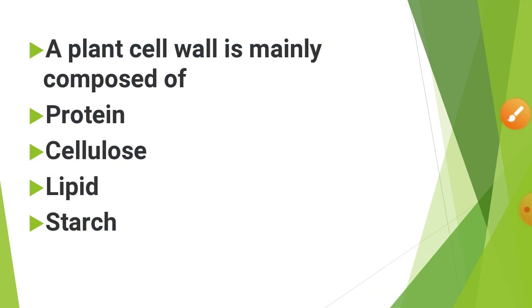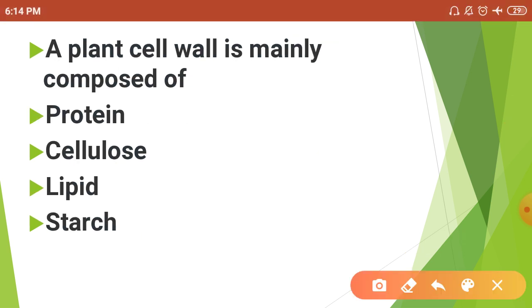The plant cell wall is mainly composed of protein, cellulose, lipid, or starch. The correct answer is cellulose.